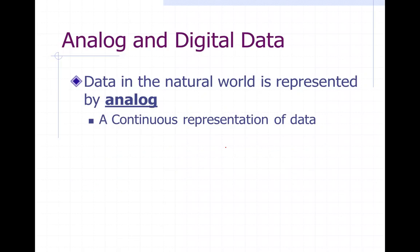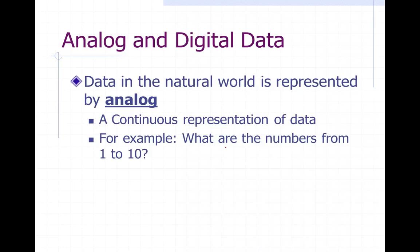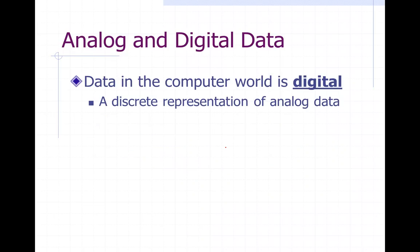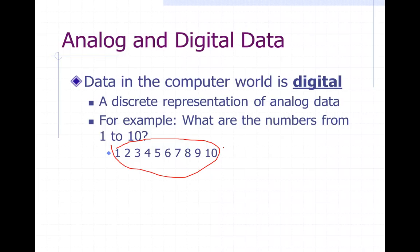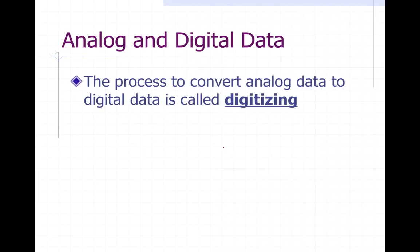Data in the natural world is analog, which is basically a continuous representation of data. For example, the numbers between one and ten — there's actually an infinite set of numbers between one and ten, so it's not finite. However, in the computer world everything is digital, which means it has to be a discrete representation of analog data. For example, the discrete representation of one to ten is simply one, two, three, four, five, six, seven, eight, nine, ten — very discrete, not continuous, not infinite.